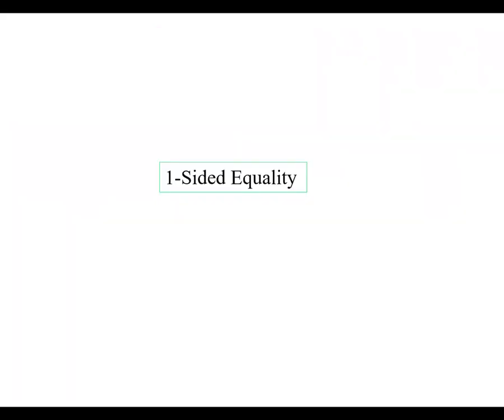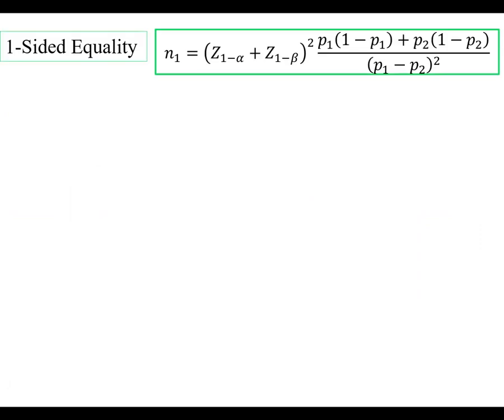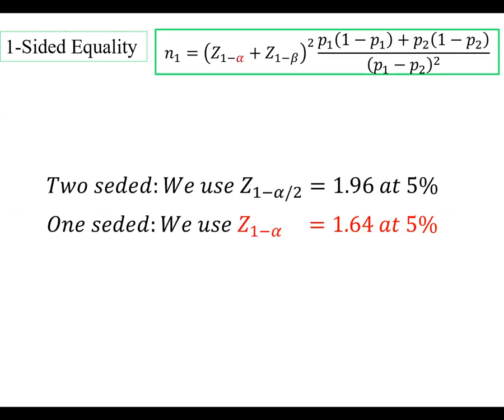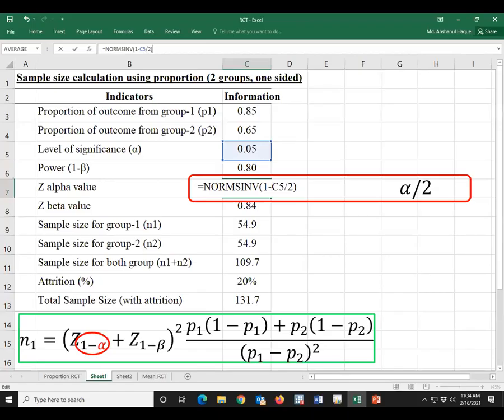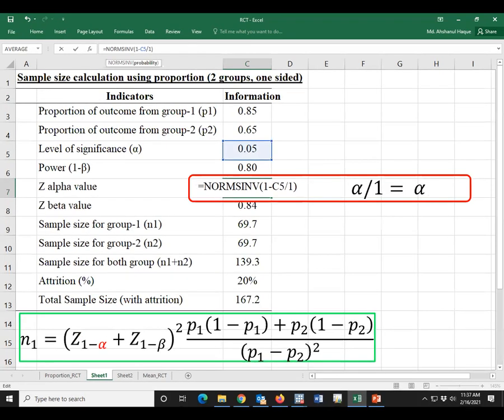Now, one-sided test. This is the sample size formula of one-sided test. We just use alpha, not alpha by two for one-sided test. Just input alpha.